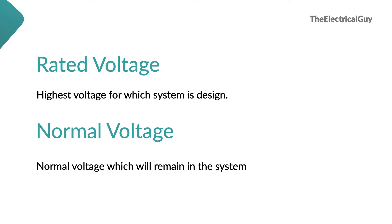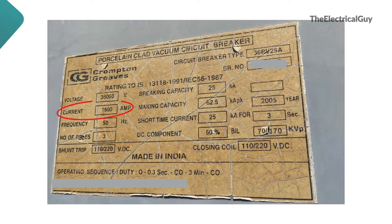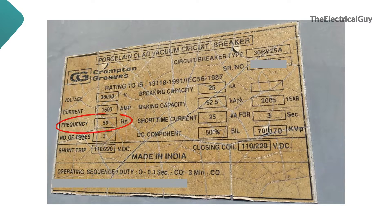Similarly, for the 245 kV voltage level, rated voltage is 245 kV and the normal voltage is 220 kV. Next is rated current — this is the rated current for which the circuit breaker is designed. The circuit breaker is able to carry 1600 A without any problem.